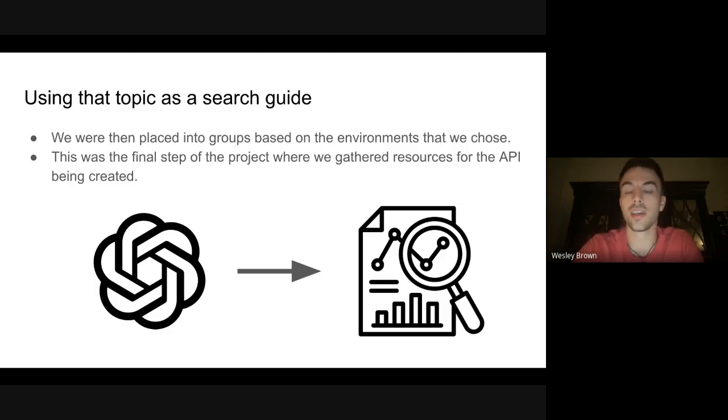So that we could essentially sift through what we already had and also search for more resources and then ultimately go through everything and sort of filter out what was quality and what was applicable to the project and what wasn't. And the goal was to come out with around 20 to 25 articles that we could apply to the API that's being created.